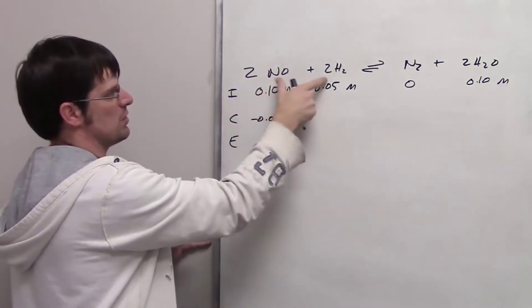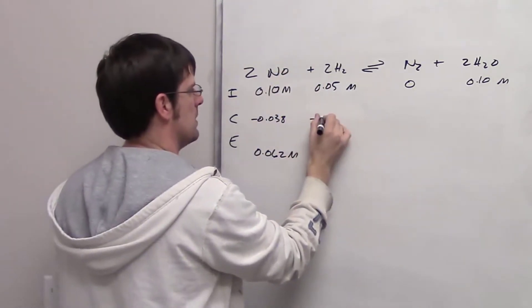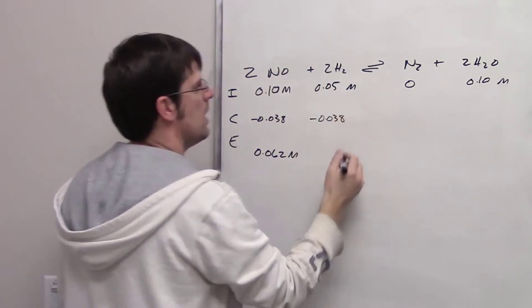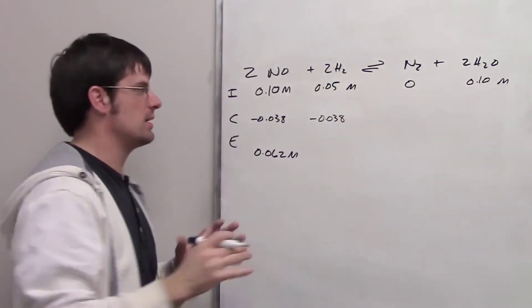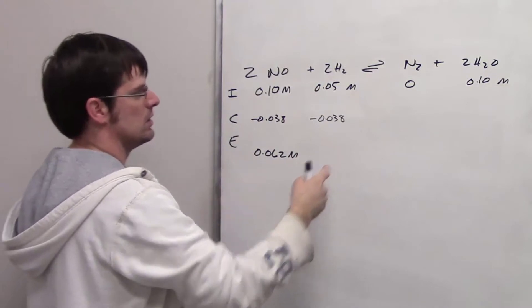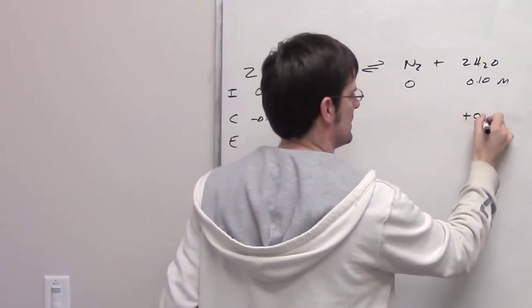These are the same number of moles, so it's going to be the same change stoichiometrically. I also have the same number of moles of H2O, but keep in mind, H2O is a product. So these guys disappear while this one appears, so I'm going to write down plus 0.038.